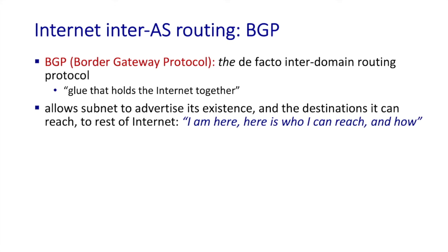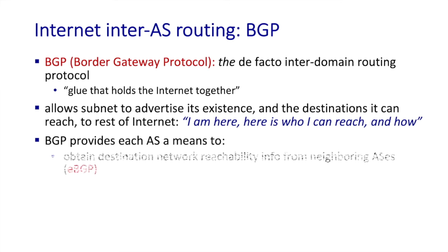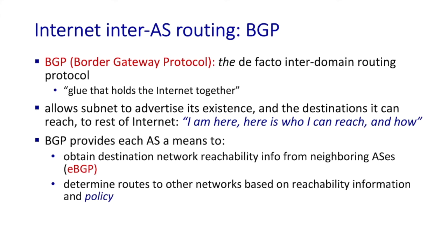A router can then determine whether or not to actually use these paths based on policy. For example, a policy might be not to use a path that passes through a given ISP or through a given country.